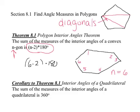6 minus 2 is 4. 4 times 180 is 720 degrees. So that's the answer. The interior angles of this polygon is 720 degrees. Corollary to theorem 8.1, interior angles of a quadrilateral. A quadrilateral is four-sided. That would be 360 degrees.